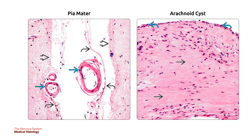The pia mater on the left is the delicate membrane that coats the brain surface as well as penetrating cerebral vessels. The potential space between the pia mater and the CNS surface is called the sub-pial space. On the right, arachnoid cysts are usually congenital and asymptomatic. The arachnoid is replaced by dense fibrosis, but the characteristic overlying single-cell layer of mesothelium is still visible.